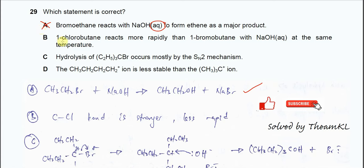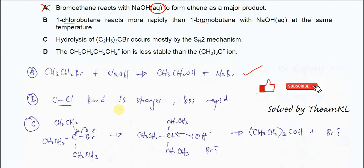Statement B: One-chlorobutane reacts more rapidly than one-bromobutane with sodium hydroxide at the same temperature. First we need to know which bond is stronger. Because chlorine is smaller than bromine, the C-Cl bond is shorter.